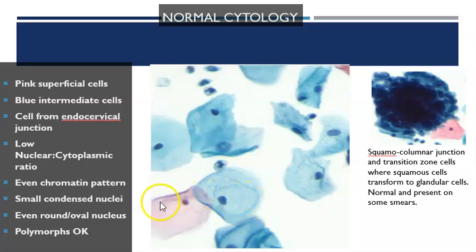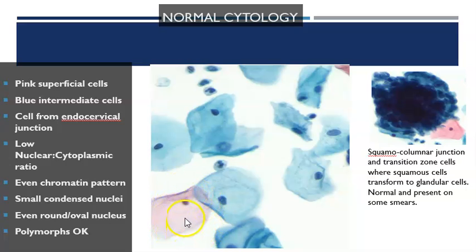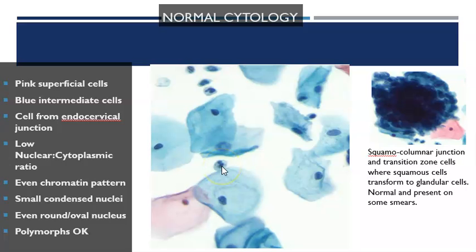This is normal cytology. We've got pink superficial cells — the very surface cells which are expressing keratin, stained up in this pink colour. We've got blue intermediate cells which have gained squamous morphology but are not expressing the keratins, with a very small nucleus and very large cytoplasm — a low nuclear-to-cytoplasmic ratio. We've got a very even chromatin pattern and one cell looks very similar to the next, with a very small oval nucleus. The presence of polymorphonuclear cells and lymphocytes is perfectly normal. Over here we've got a cluster of squamous columnar junction cells from that transitional zone, which can look quite alarming like a cluster of tumour cells but a trained cytologist would recognise them every time.